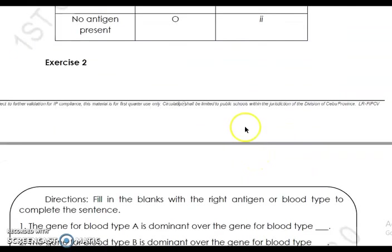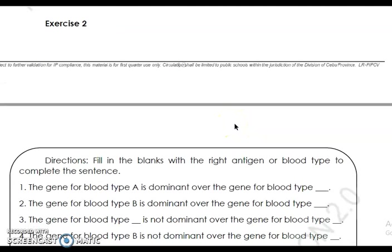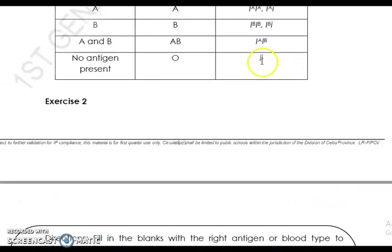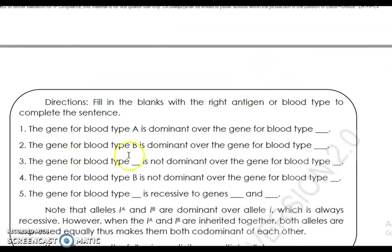Let's try to answer Exercise 2 to get familiar with this principle. First: the gene for blood type A is dominant over the gene for blood type O. If you observe, blood type O has the genotype small letter i — meaning it is recessive. Second: the gene for blood type B is also dominant over the gene for blood type O. So both A and B are dominant over O.